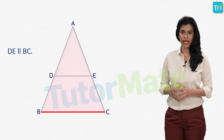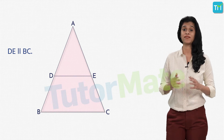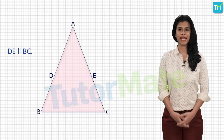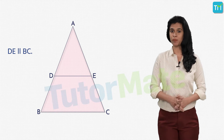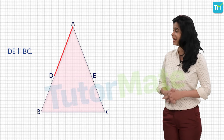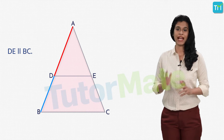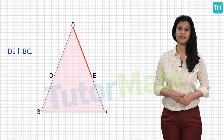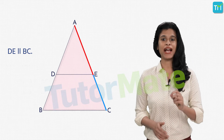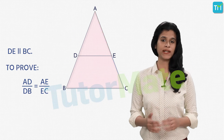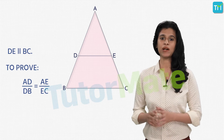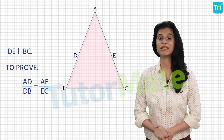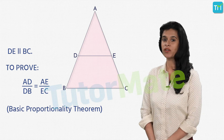Now what we have to prove is that this line divides the sides in an equal ratio. We can see that this line divides AB into two parts AD and DB. At the same time, it divides AC into two parts AE and EC. So we have to prove that AD upon DB is equal to AE upon EC, and that is the Basic Proportionality Theorem.